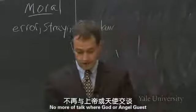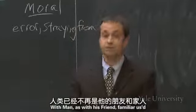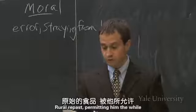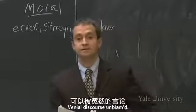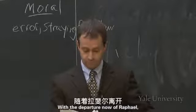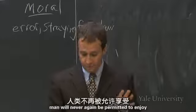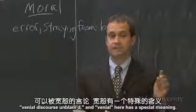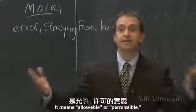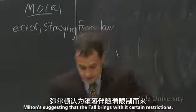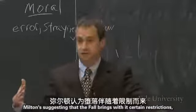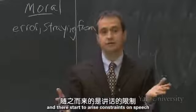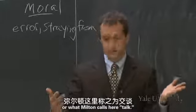"No more of talk where God or angel guests, with man as with his friend, familiar, used to sit indulgent, and with him partake rural repast, permitting him the while venial discourse unblamed." With the departure of Raphael, man will never again be permitted to enjoy venial discourse unblamed. Venial here means allowable or permissible. Milton is suggesting that the fall brings certain restrictions — specifically restrictions of language — and constraints on speech, or what Milton calls here, talk.